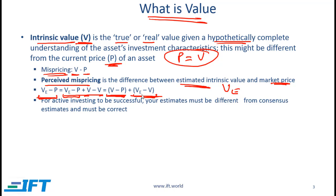If you are an active investor trying to identify underpriced securities, then for you to be successful in the long run, two things need to happen. First, V and P need to be different — in a completely efficient market the value equals price, so you must be operating in a market that is not efficient, where you can make abnormal returns. Second, the difference between your estimated value and the true intrinsic value should be as low as possible. Ideally, if this term is close to zero and the assets are underpriced — meaning P is relatively low and the true intrinsic value is relatively high — then you as an active manager will make money. For active investing to be successful, your estimates must be different from consensus estimates and must be correct.